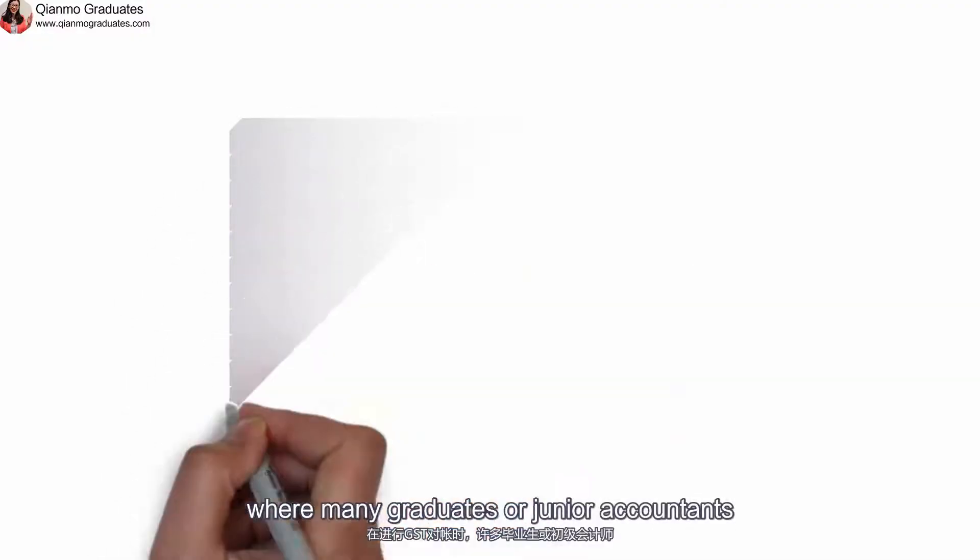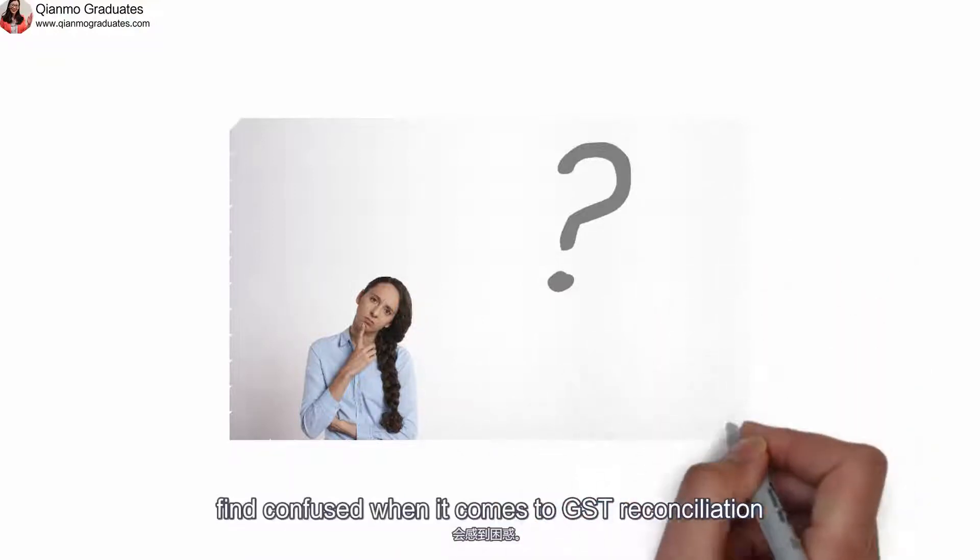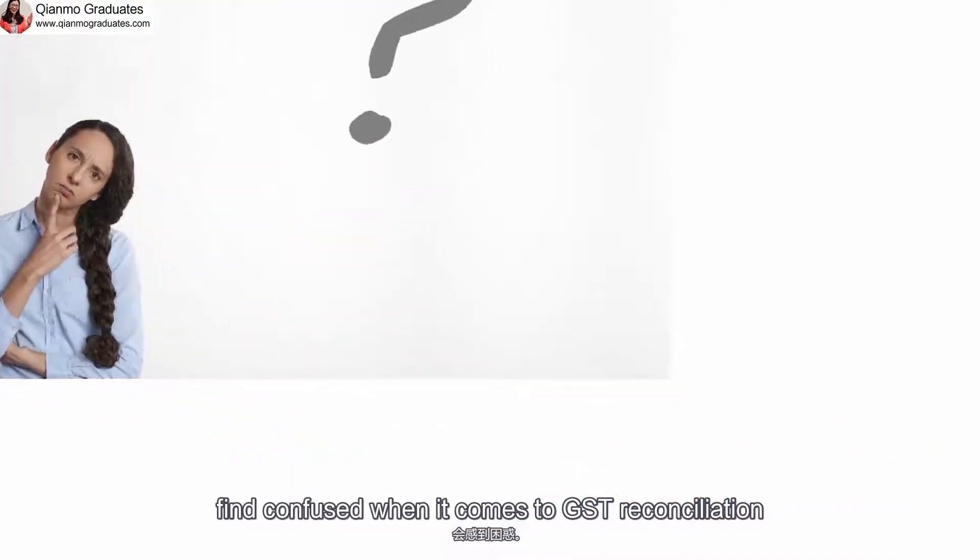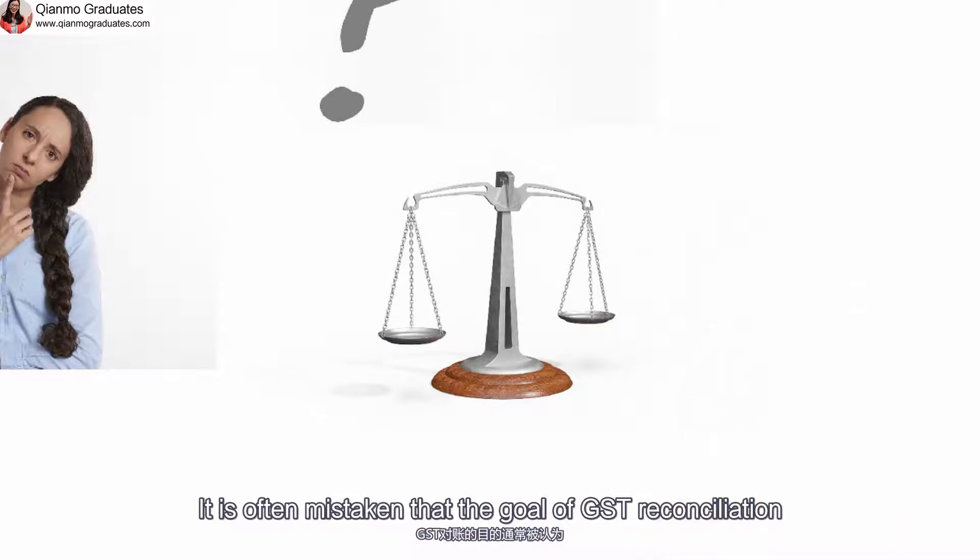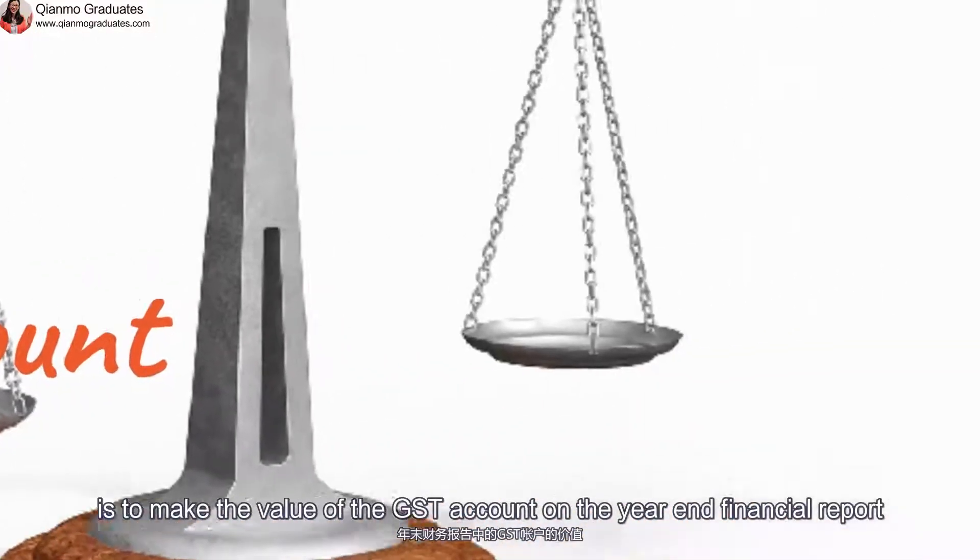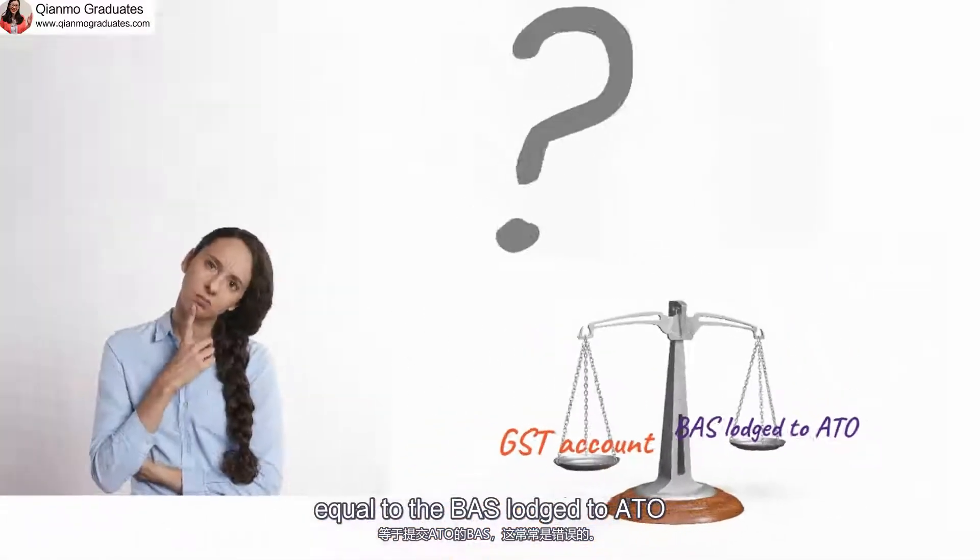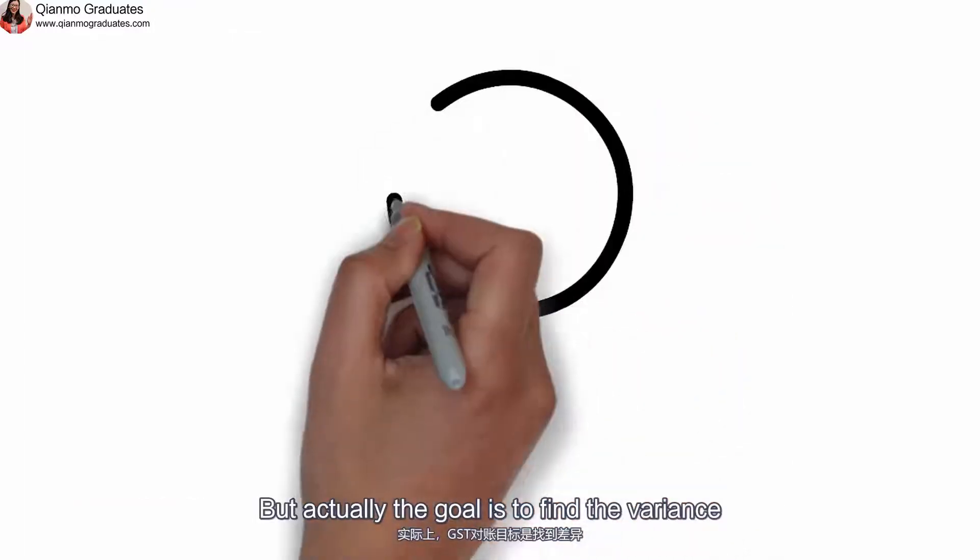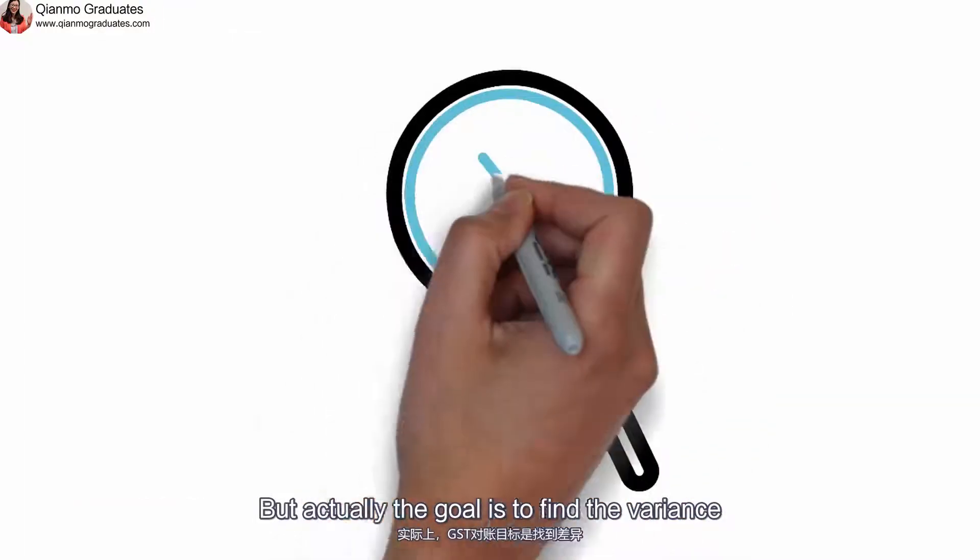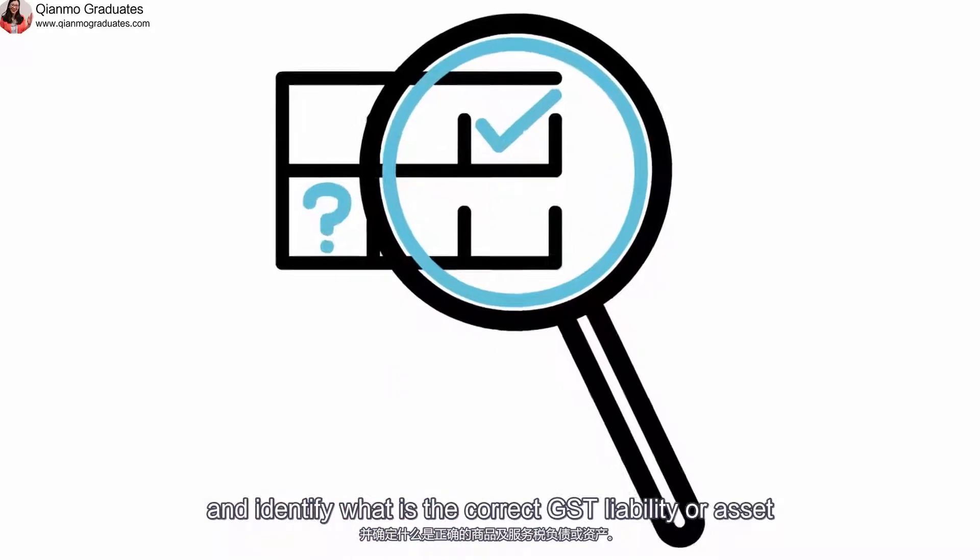From experience, here is where many graduates or junior accountants find confused when it comes to GST reconciliation. It is often mistaken that the goal of the GST reconciliation is to make the value of the GST account on the year-end financial report equal to the BATS lodged to ATO.